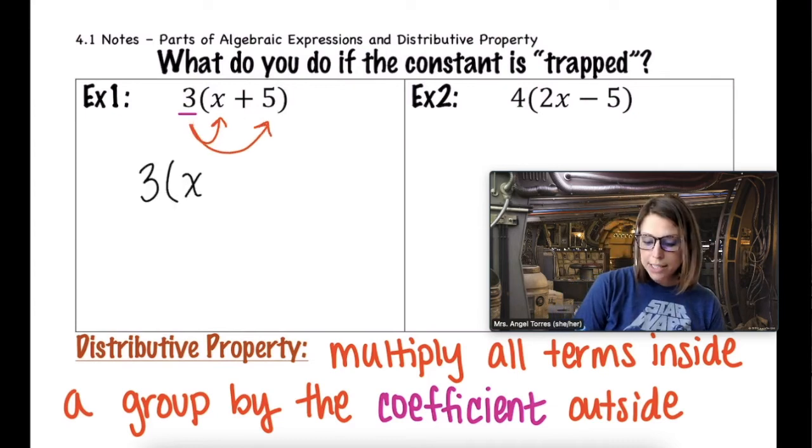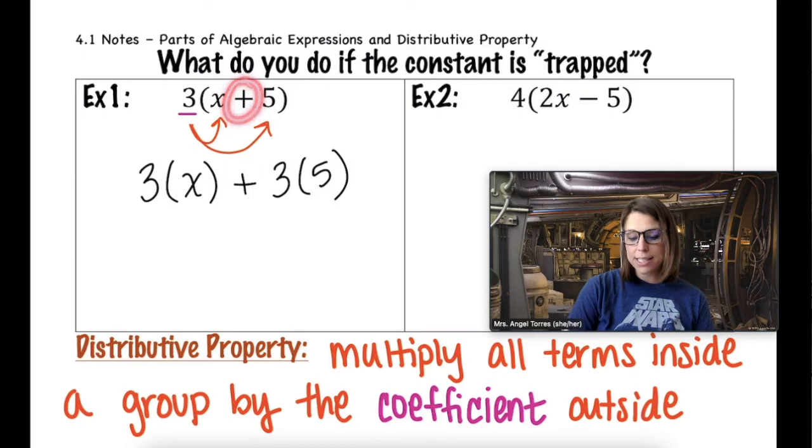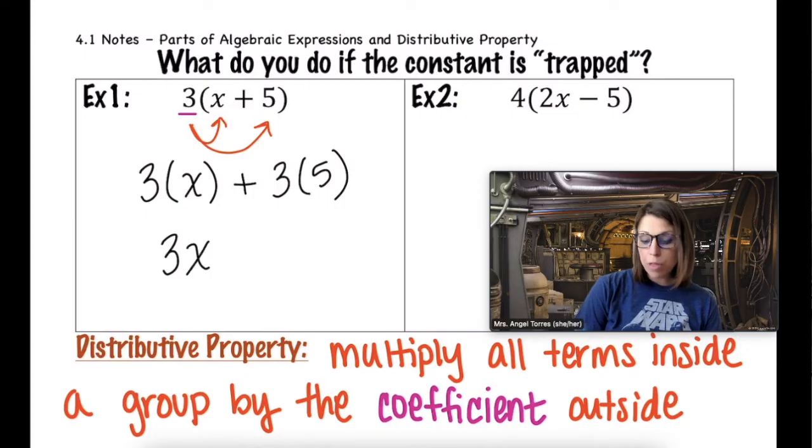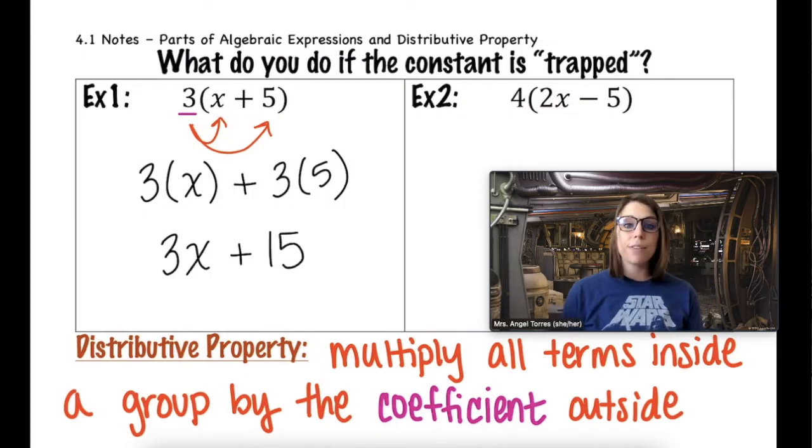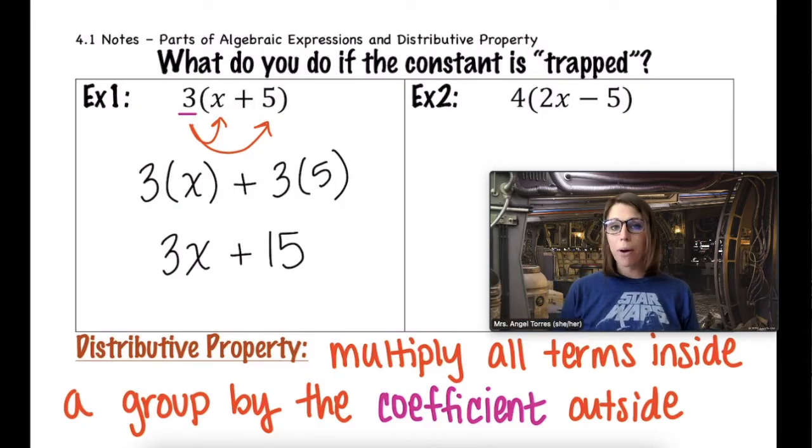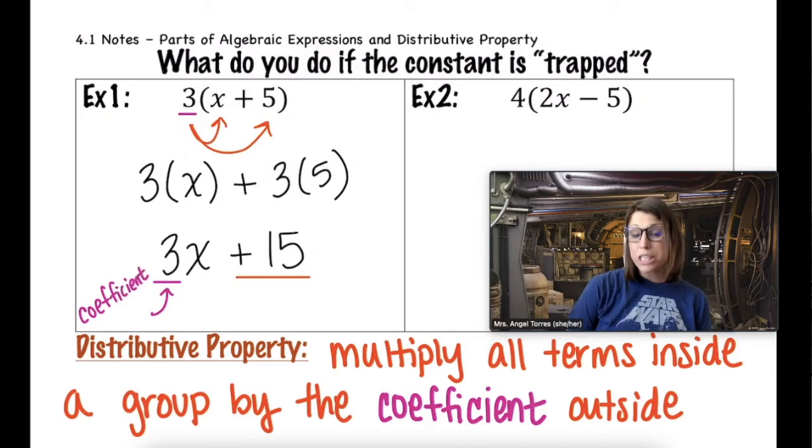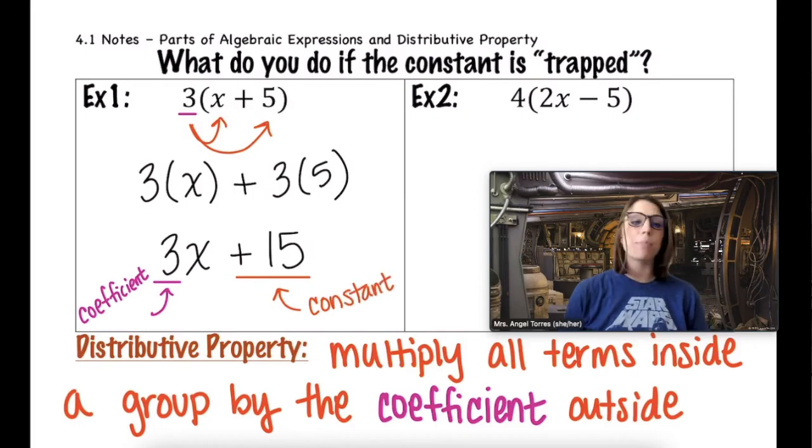3 times x plus 3 times 5. Notice the structure inside of the group is maintained, meaning if addition is happening inside of the group, addition is going to happen outside of the group. 3 times x is simply 3x plus 3 times 5 is 15. Now that our constant is free, we can go in and label the parts of this expression. 3 here, since it's attached to my variable, is my coefficient. And my constant, which originally was 5, has now become 15 since I multiplied it by 3.